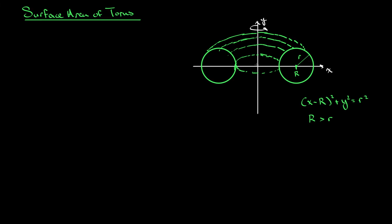Continuing to work with surface area, I have another problem for us to work on. I've already tried to sketch this out a little bit, mainly because I'm horrible at drawing, but here's the scenario. We have this circle over here, and I have the equation for it, and it has this center along this x-axis here, and it's a distance of capital R away from the origin, and its radius is this lowercase r. What we're going to do is take this circle and rotate it about the y-axis, and what you're going to see is that we get this torus — really, if I were to describe it to you, it's a donut.